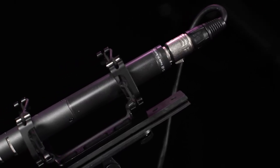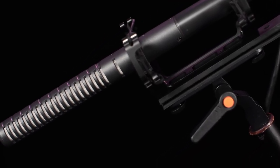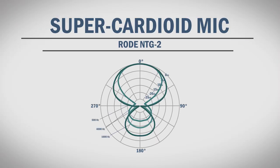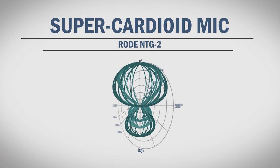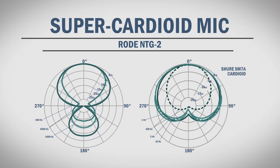Mics with supercardioid patterns are similar to hypercardioid, but have even more pickup from the front and less pickup from the back. Some supercardioid mics use interference tubes that use phase cancellation to eliminate more sound from the sides. These are often referred to as shotgun or line and gradient mics. Because of their narrow pickup, they require even more accurate positioning, but can also be further away from the source and still capture good sound, making them extremely useful for many video projects. This is the polar pattern of the Rode NTG2 shotgun mic. You can see that the side rejection is significant, but the sensitivity from the back is also more pronounced. The difference from the SM7A cardioid pattern is very pronounced.